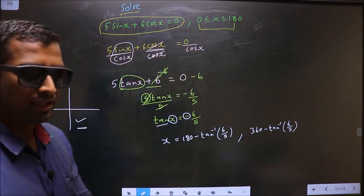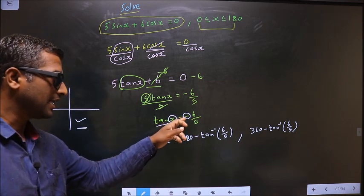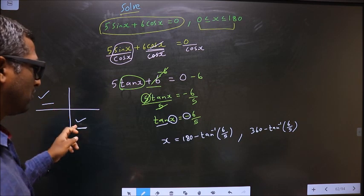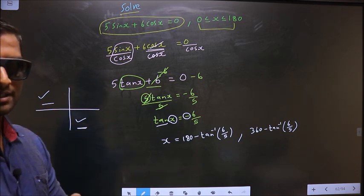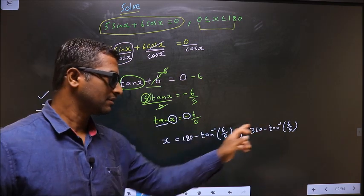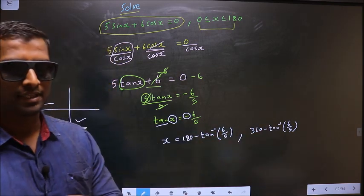Now remember this. This negative sign is used only for selecting the quadrants. Once quadrants have been selected do not place negative sign again here. Remember that.